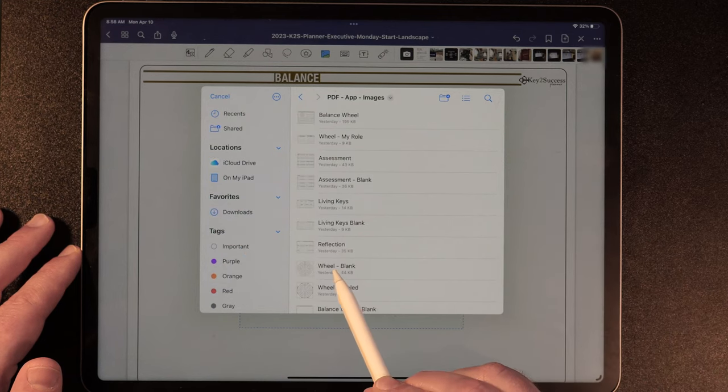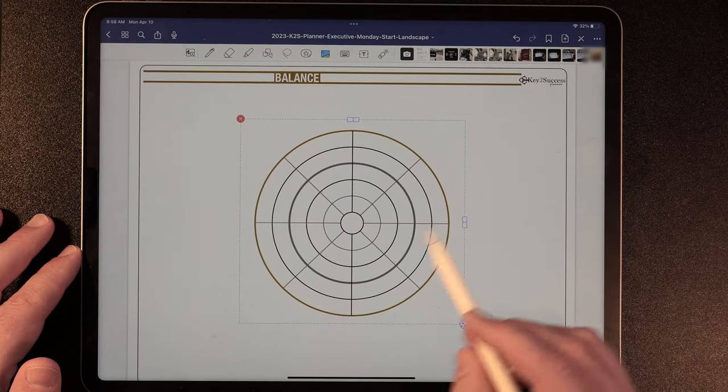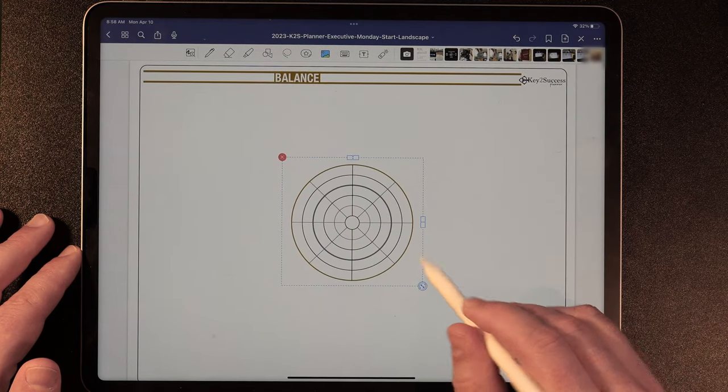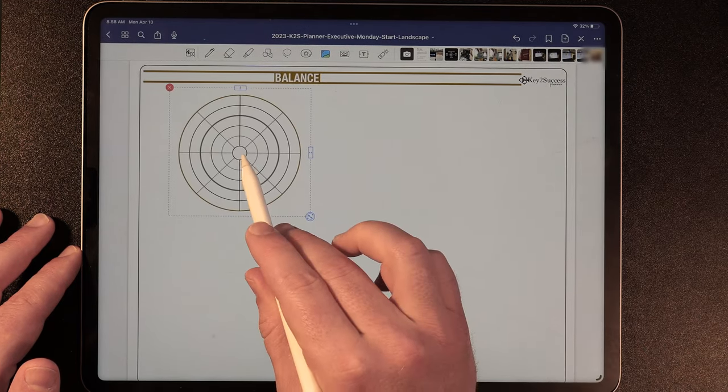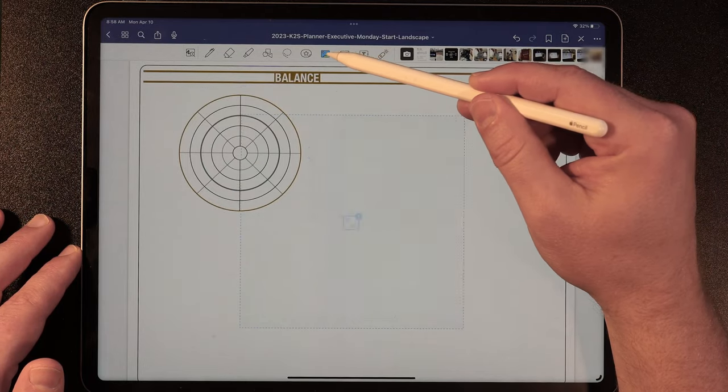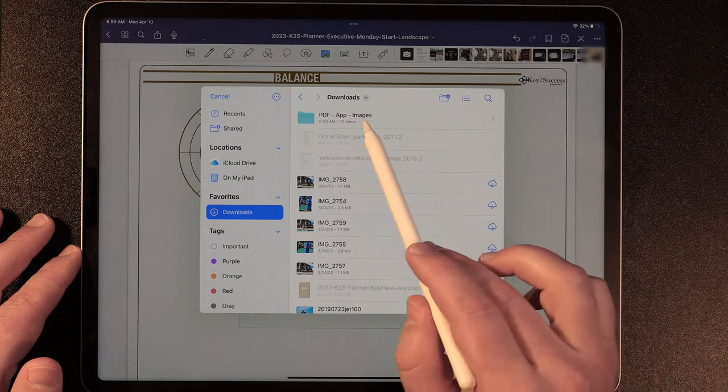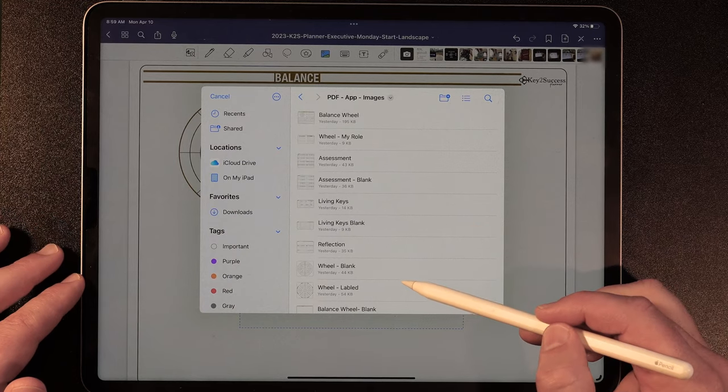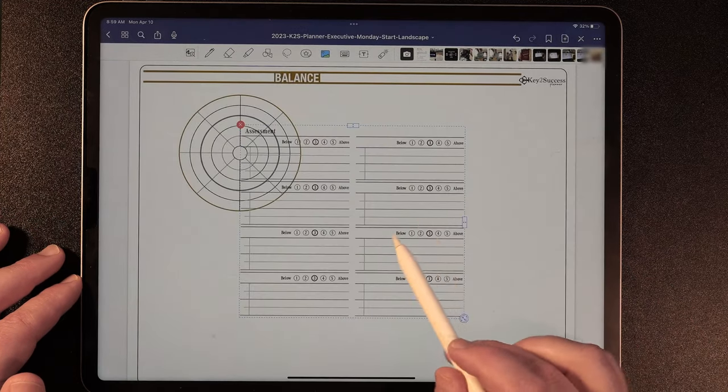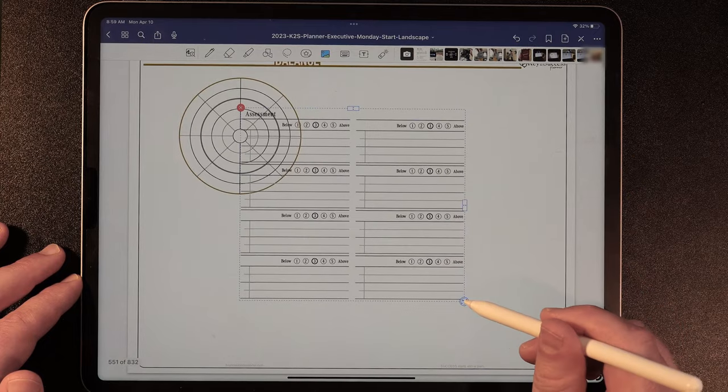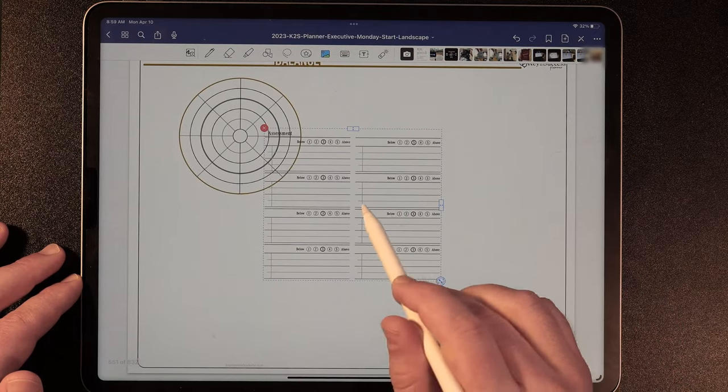And then go ahead and click on insert from. And this time again, we're going to choose from downloads, PDF app annotations. And I'm going to choose that wheel that's blank and that's going to insert. And then I'm just going to go ahead and pull that in here. And then I'm going to go ahead and pull in the next one. And I'm going to continue this process until I make my assessment board.